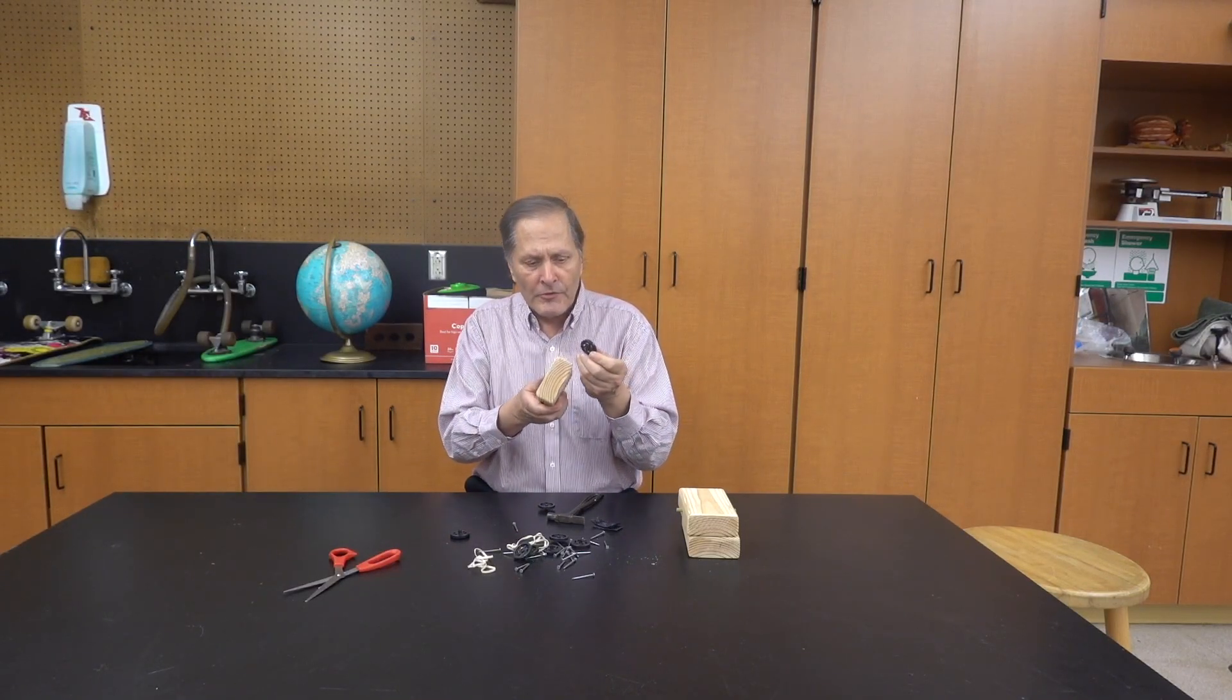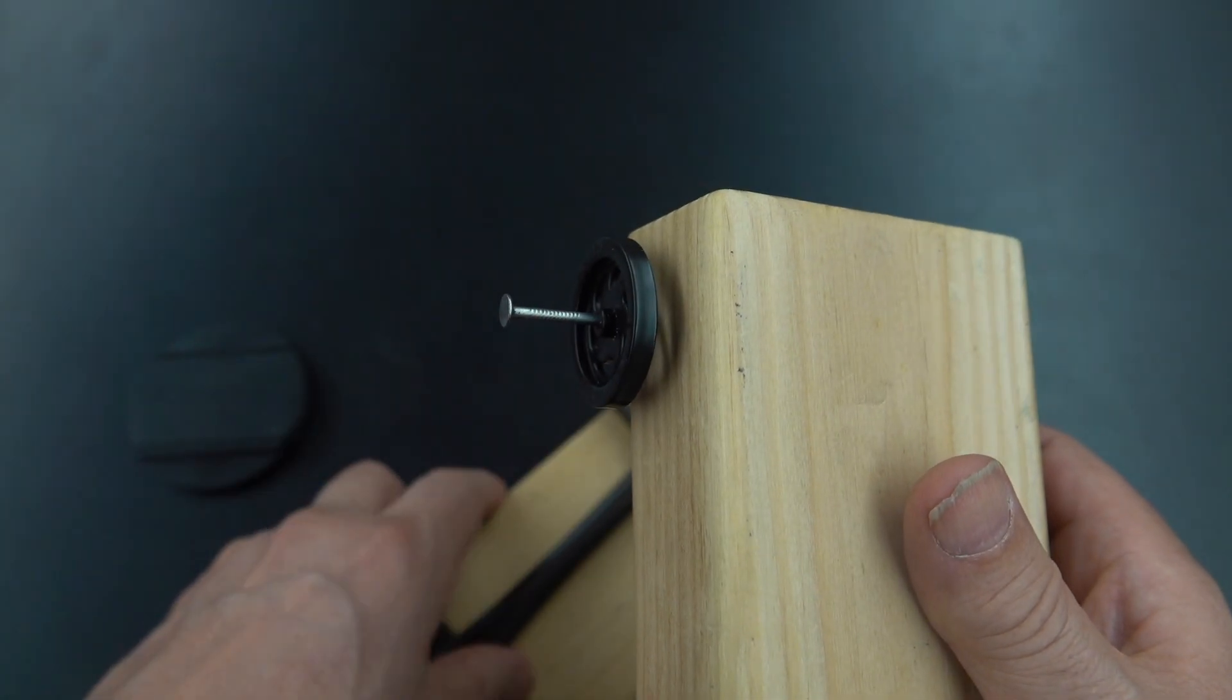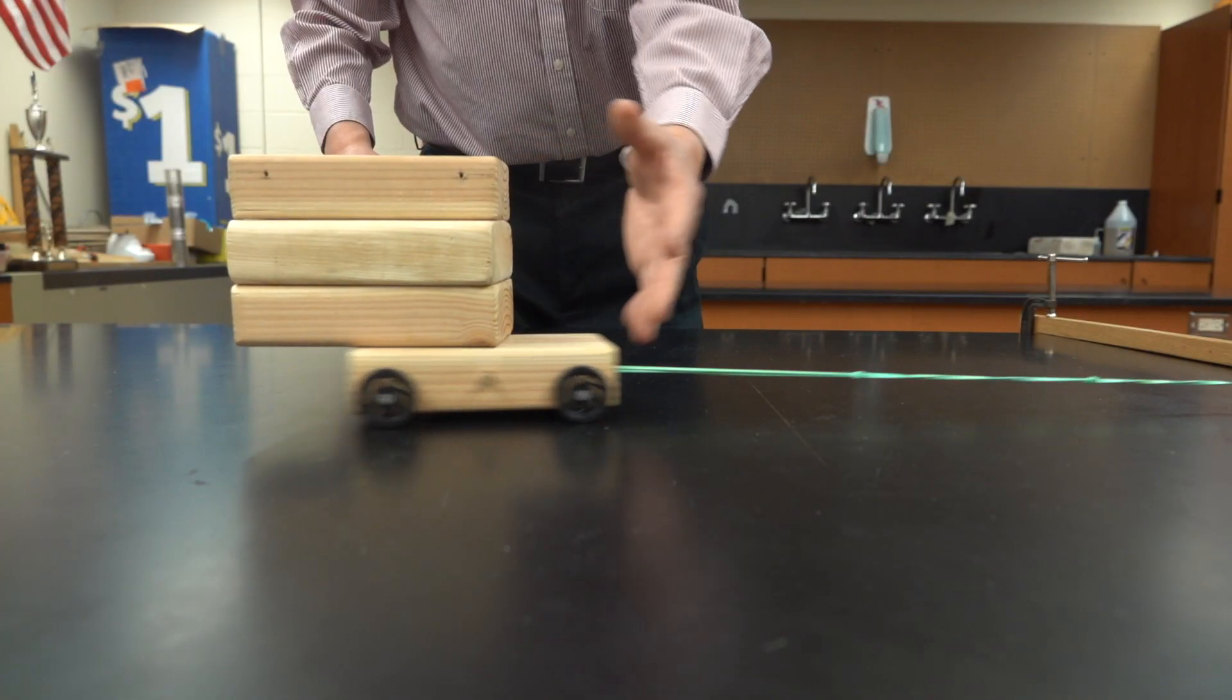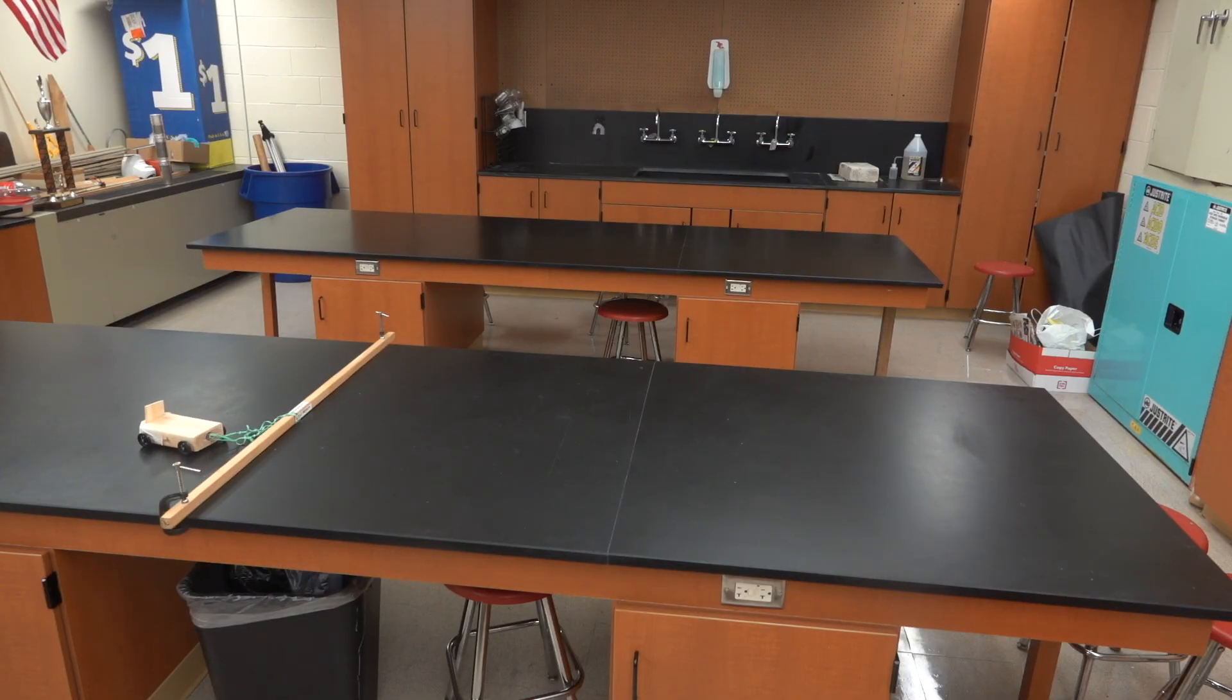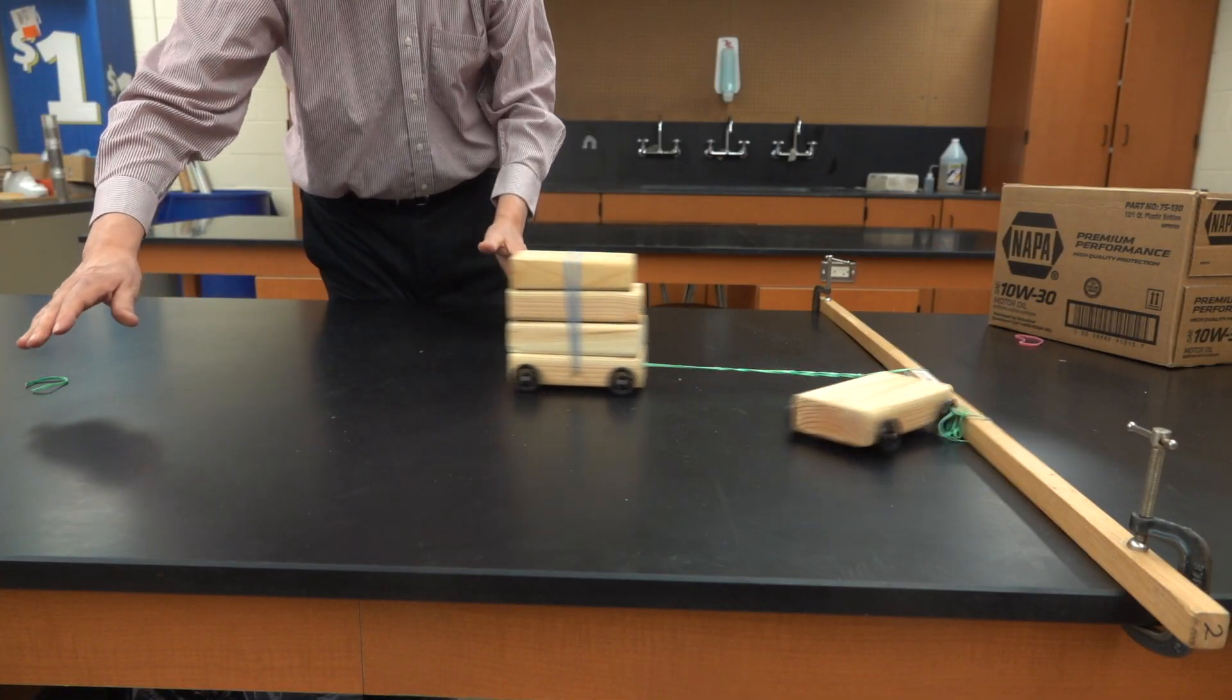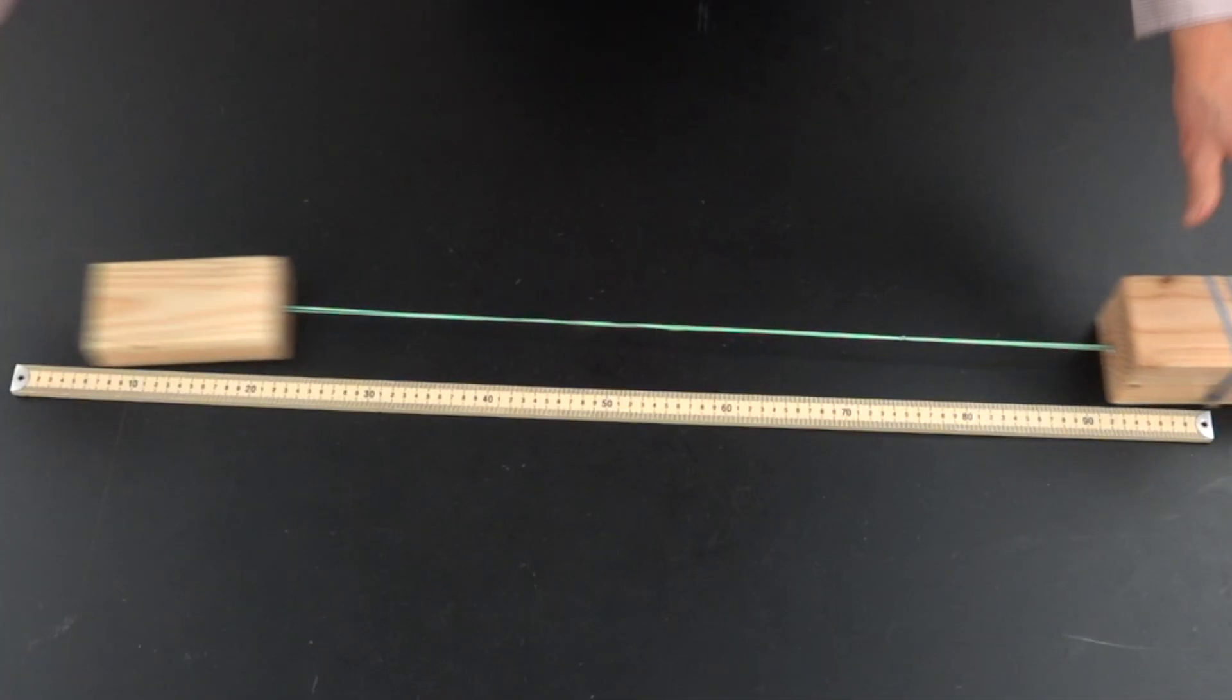Now another possibility is to add some wheels to the blocks. Simple plastic wheels nailed into the sides of the blocks can improve the performance as it decreases the amount of friction.